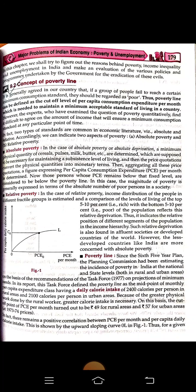There are two types of standards common in economic literature: one is absolute poverty and the other is relative poverty. Absolute poverty, also called absolute deprivation, is where a minimum physical quantity of cereals, pulses, milk, butter, etc. are determined, which are supposed to be necessary to maintain a subsistent level of living.